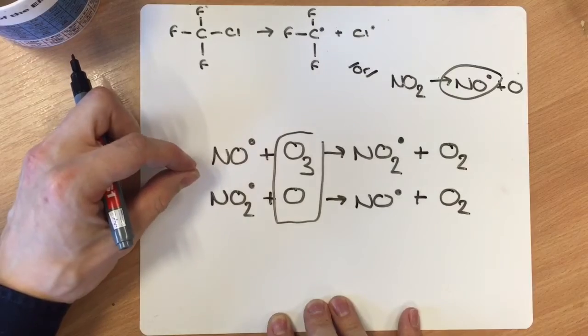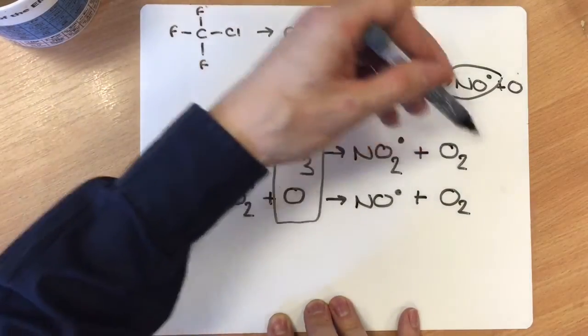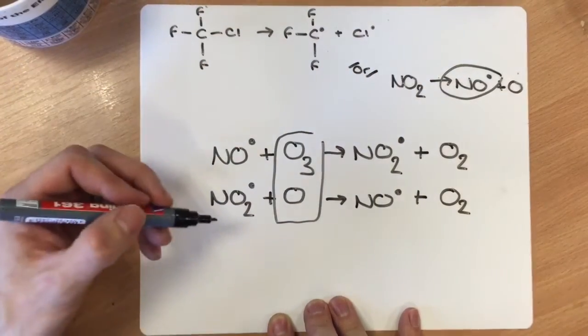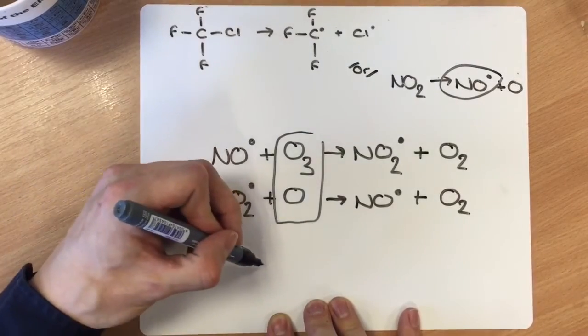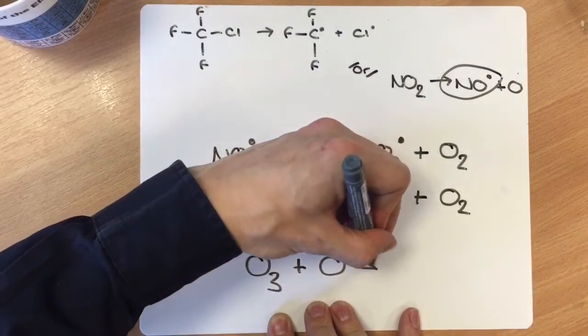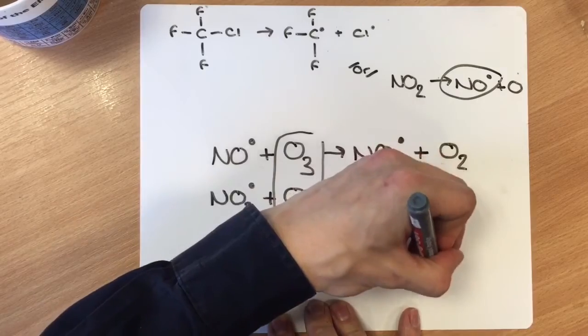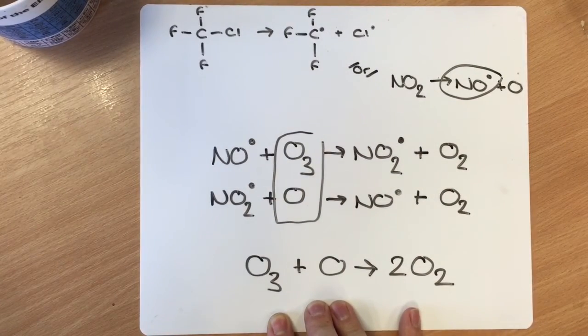What you also form here is another molecule of O2. Now, if you combine these two equations, so you combine the two left-hand sides to make one left-hand side, two right-hand sides to make one right-hand side, and then cancel down everything that appears on both sides in the same proportions, what you're actually left with is an overall equation of O3 plus O reacting to form 2O2.